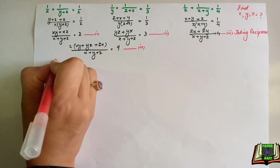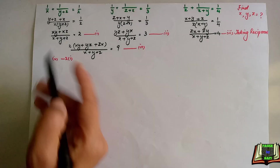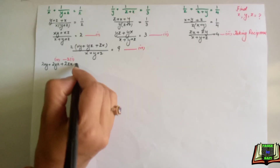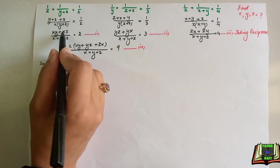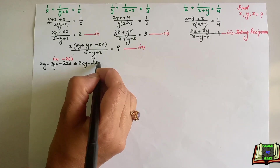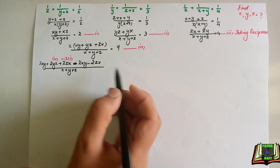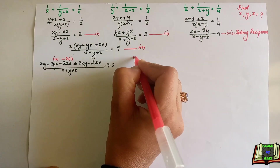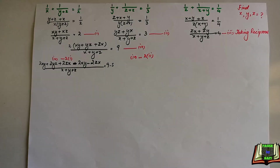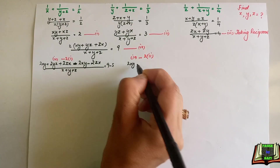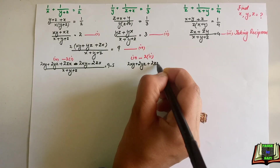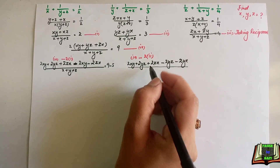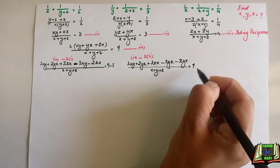Now we multiply equation 1 by 2 and subtract from equation 4. Equation 4 minus 2 times equation 1 gives: 2xy+2yz+2zx minus 2(xy+xz), so the 2xy and 2zx terms cancel, leaving 2yz divided by (x+y+z). On the right side: 9 minus 2×2 equals 5. Similarly, equation 4 minus 2 times equation 2 gives 2zx divided by (x+y+z) equal to 6.